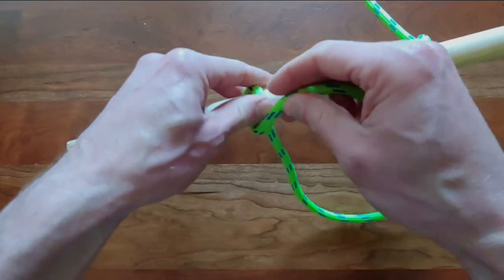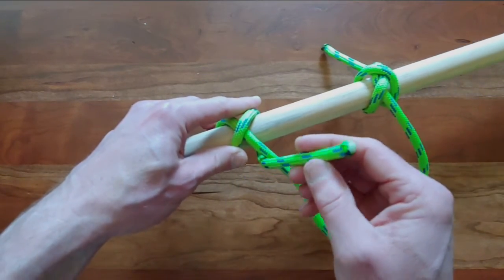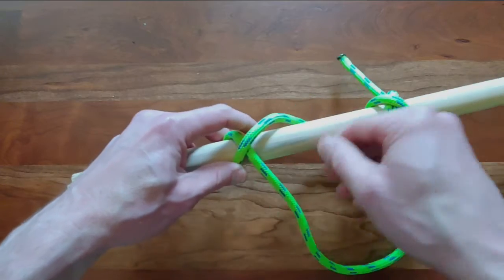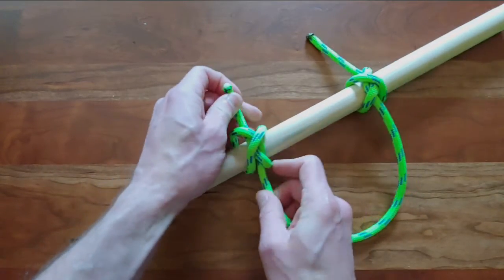Now I'm going to tie my constrictor knot over here on this side. You can see I'm starting to bring it up the wrong way, and then I remember I've got to tie the mirror image, so I'm going to go around and under and pull through.